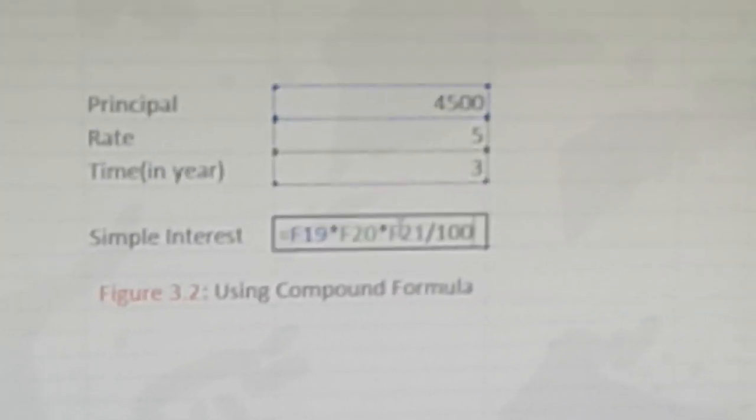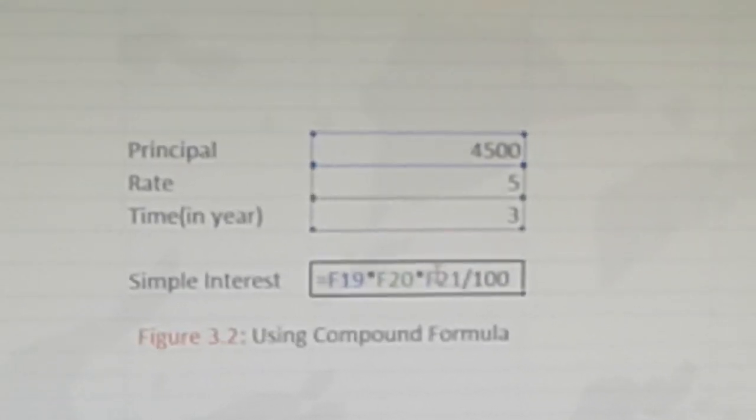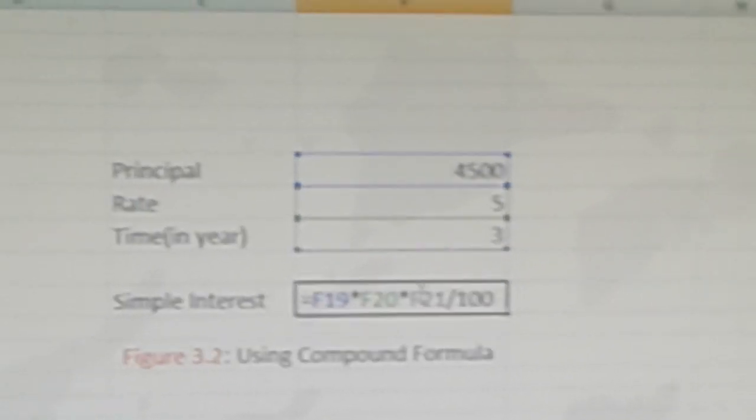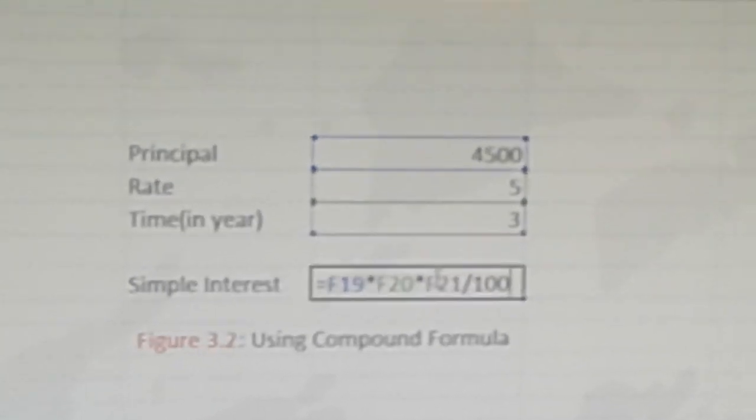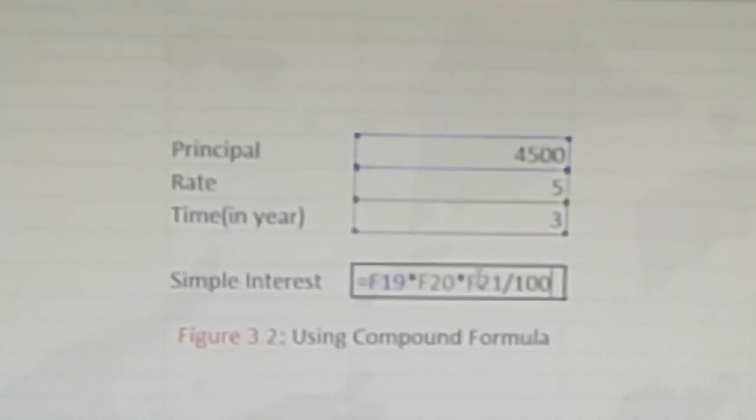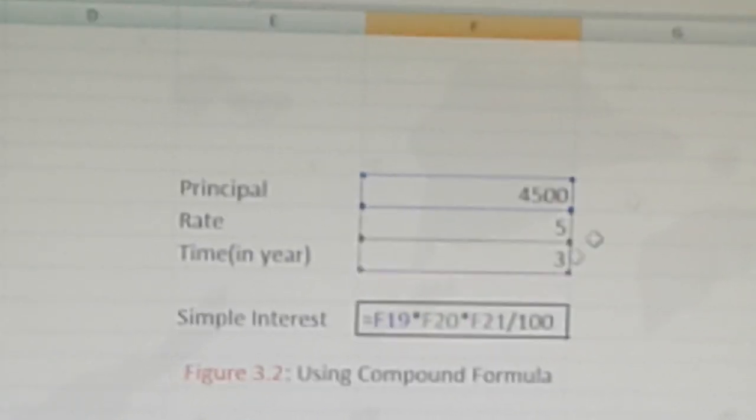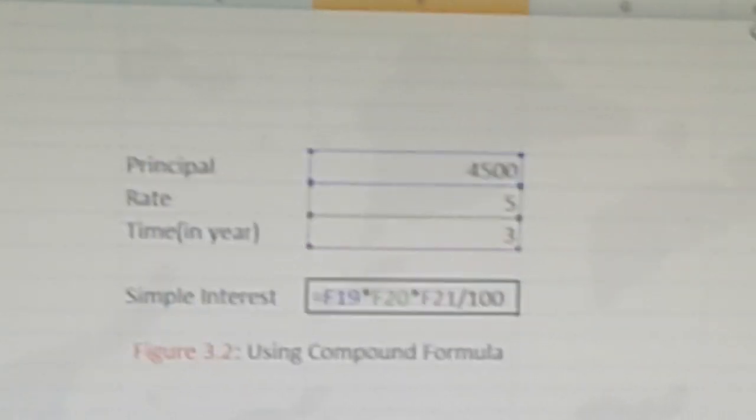Again, I'll recall: a basic formula uses only one operator, whereas a compound formula uses two or more operators. In this formula, we used two operators: multiplication and division. Now press the Enter key, and the simple interest will be displayed.